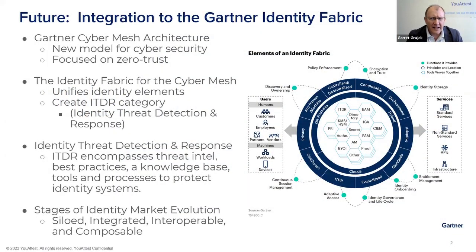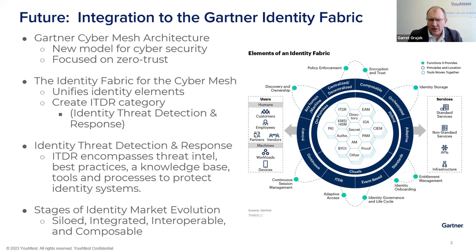Gartner has something they call the identity fabric, and it's a pretty cool concept. It's saying there are a lot of components, companies, vendors, and products out there in the identity space. In the past, we really haven't worked together — everyone had their own silo execution. And what they're saying is, to solve the ransomware problems and identity hacking, we've got to work together.